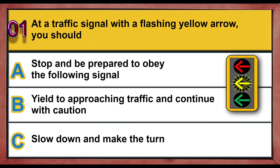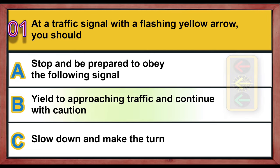Question 1. At a traffic signal with a flashing yellow arrow, you should: A. Stop and be prepared to obey the following signal. B. Yield to approaching traffic and continue with caution. C. Slow down and make the turn. Correct answer is B: Yield to approaching traffic and continue with caution.